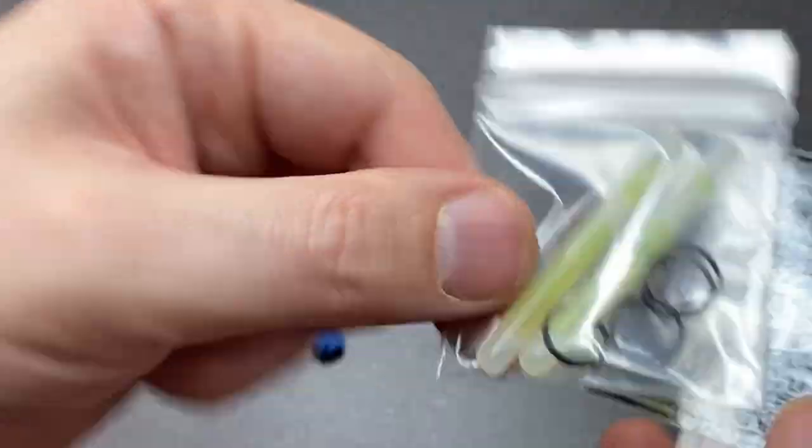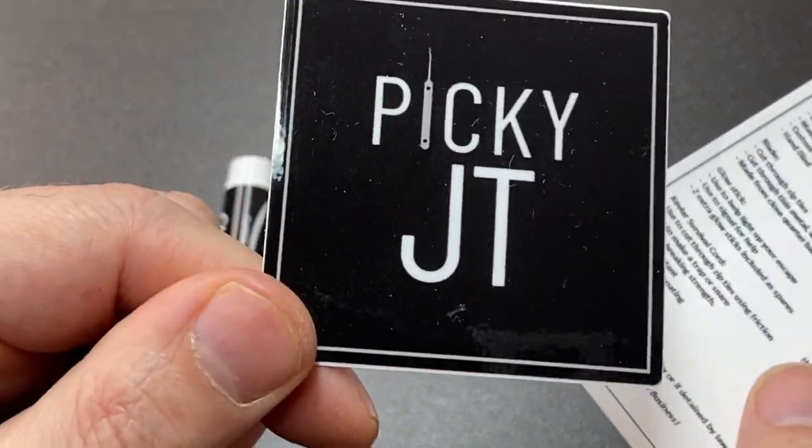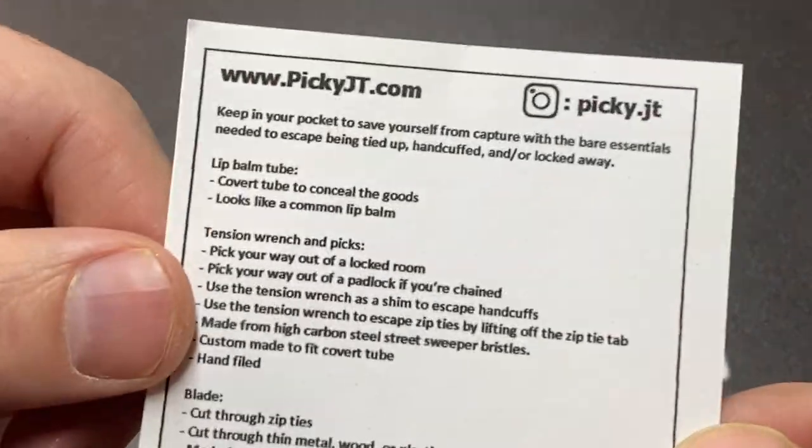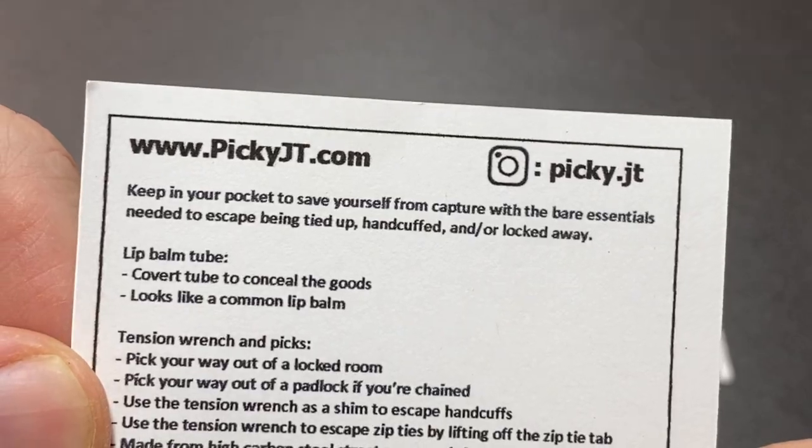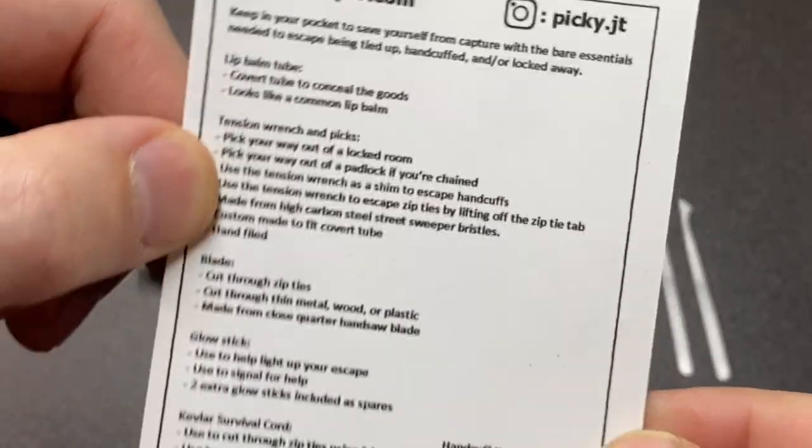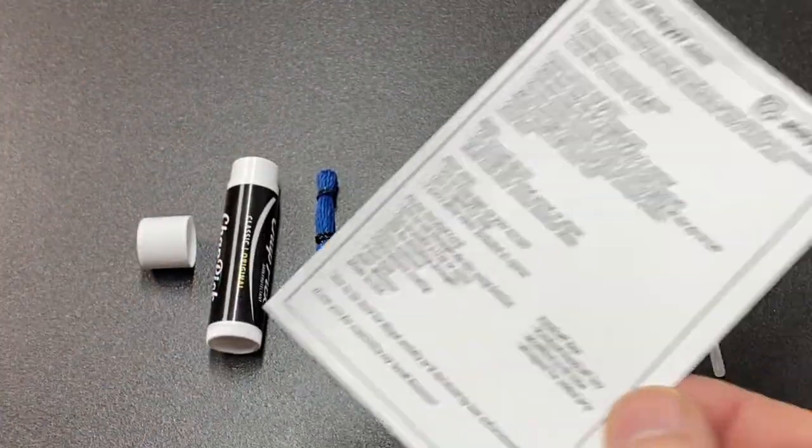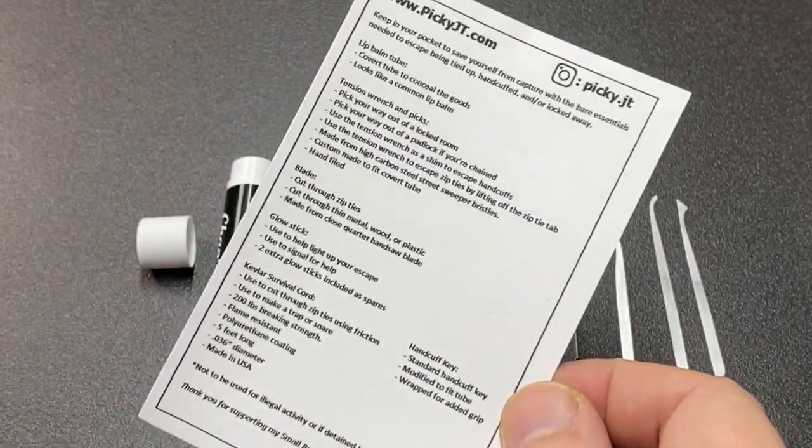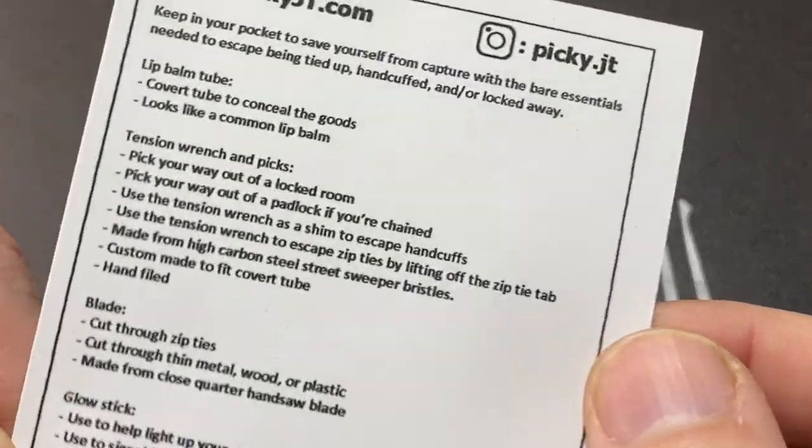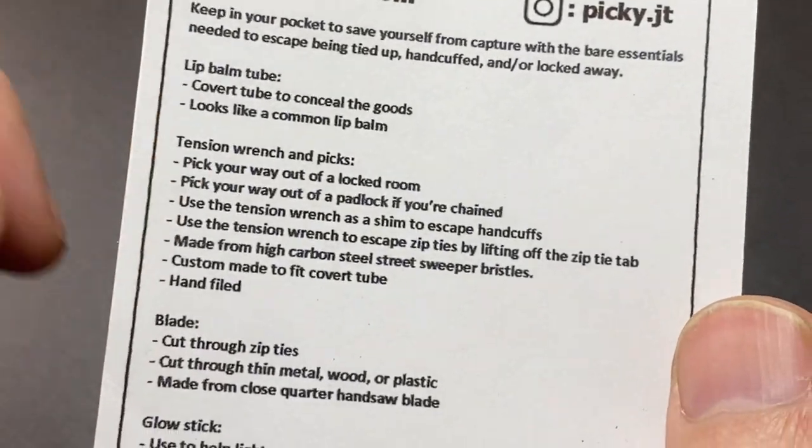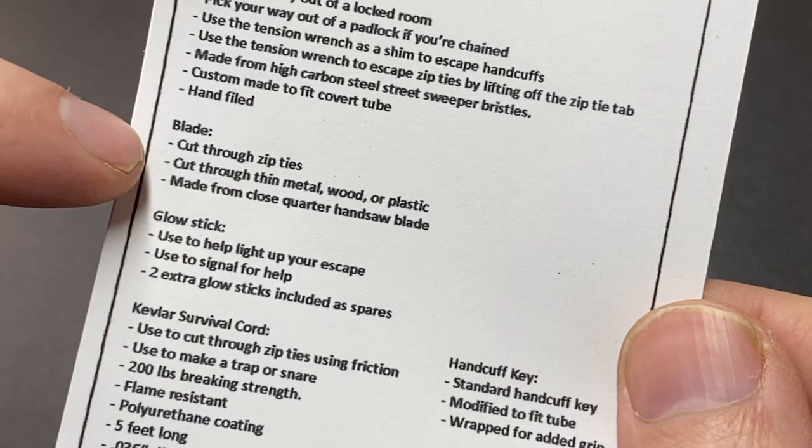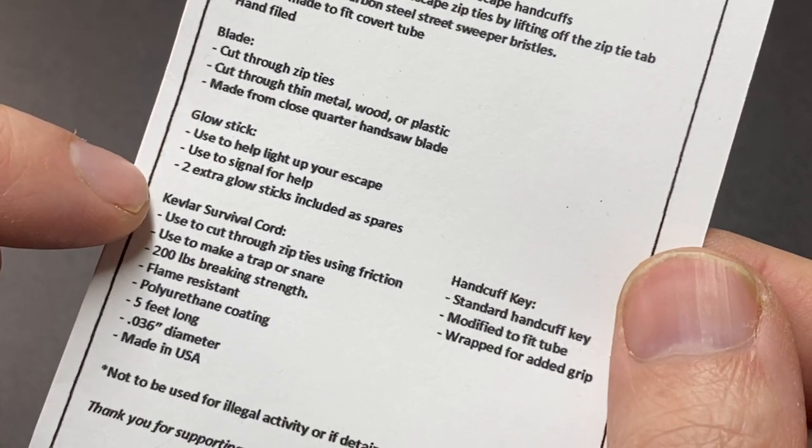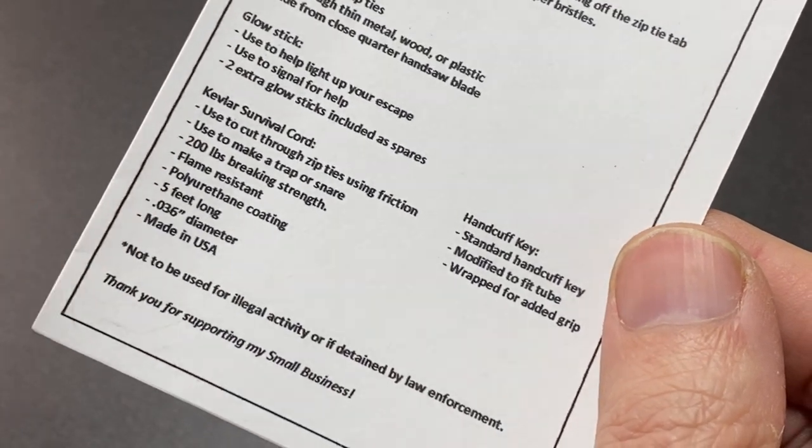There's also a sticker and a card with information about PiggyJT.com, who sent me this kit for review. This was sent for review but not a paid review - all thoughts are my own. The card lists everything: lip balm tube, tension wrench and picks, blade, glow stick, Kevlar survival cord. Very cool.